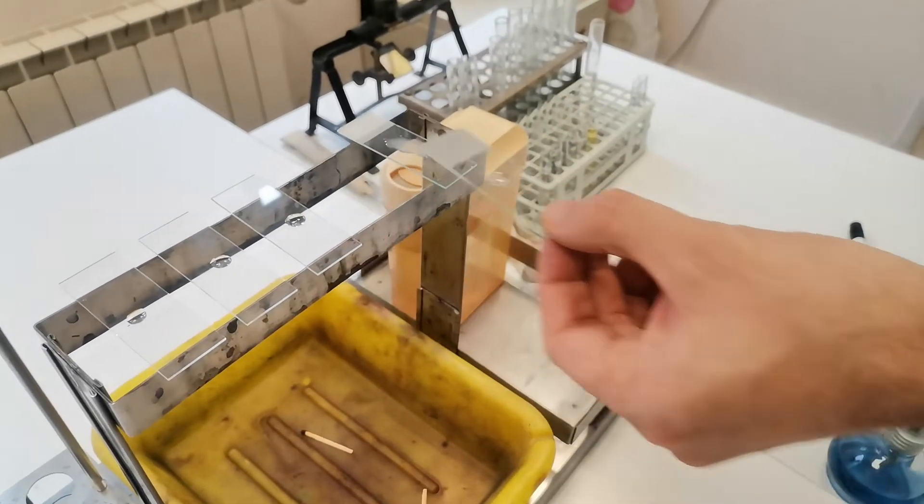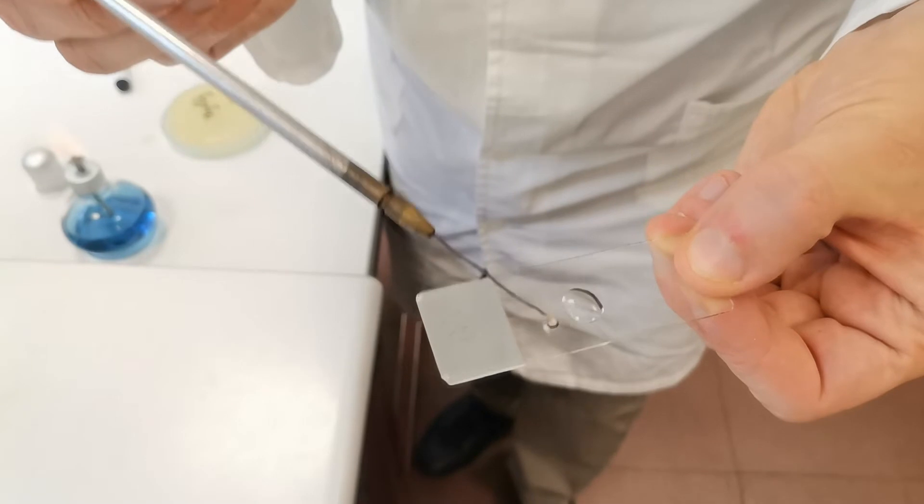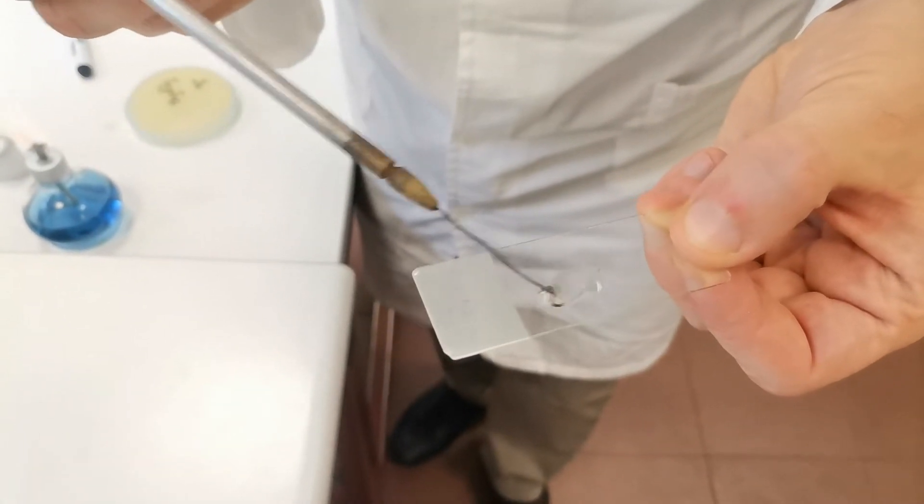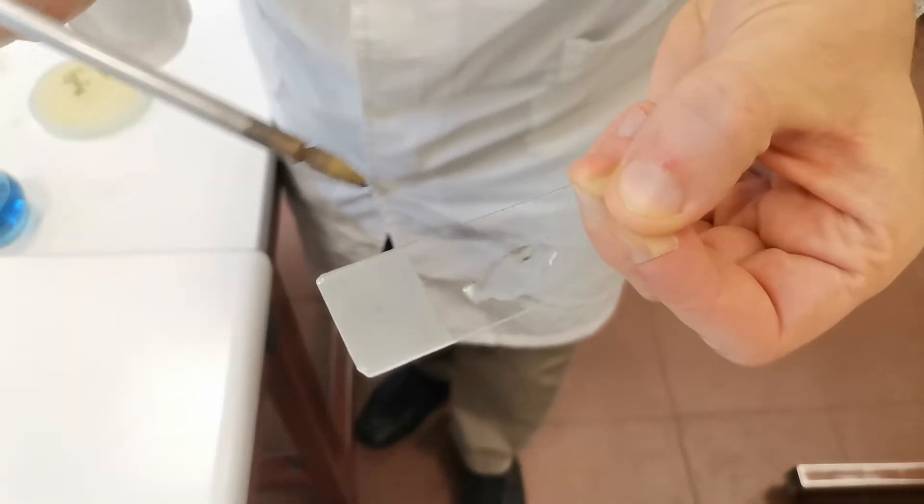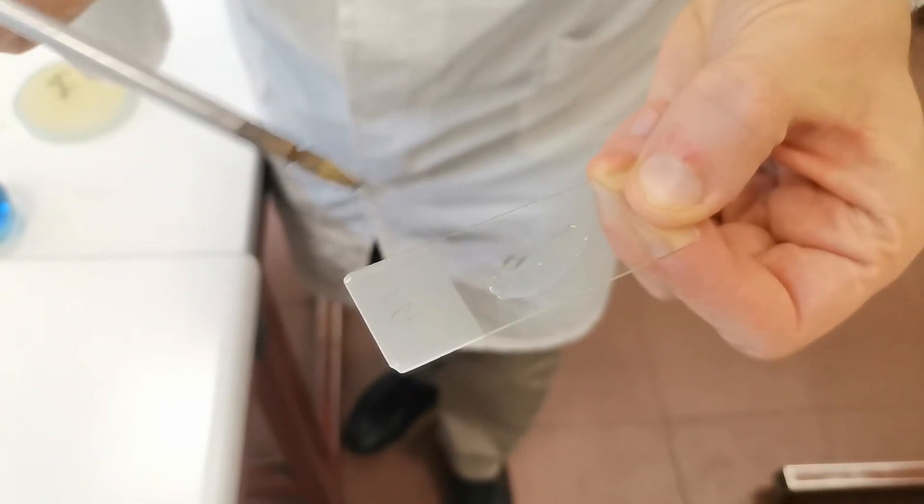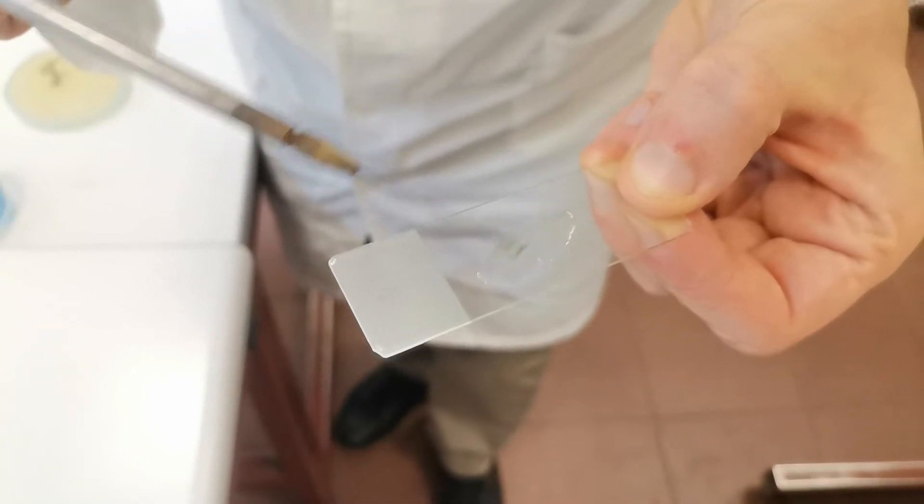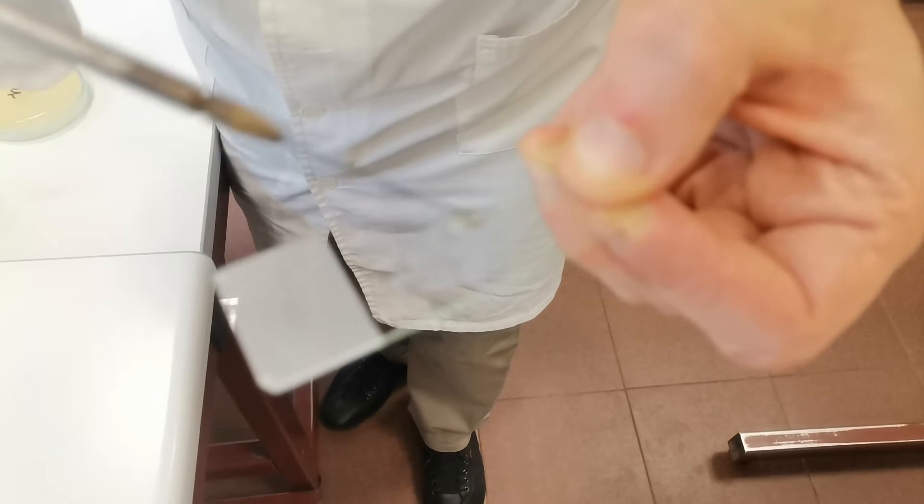This is the O111 serum. Here we place the pure culture. Gradually start mixing. I think it's obvious. Because this is the agglutination. The drop is quite clear. Probably it will become even better after a minute or so. There are fine grains.